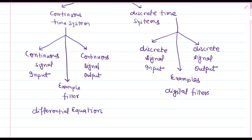The output of discrete time systems depends on the current input signal, the previous input signal, and the previous output signal — that is, the history of how the input signal changed over the discrete time intervals. Similar to continuous time systems, discrete time systems may or may not depend on this history.